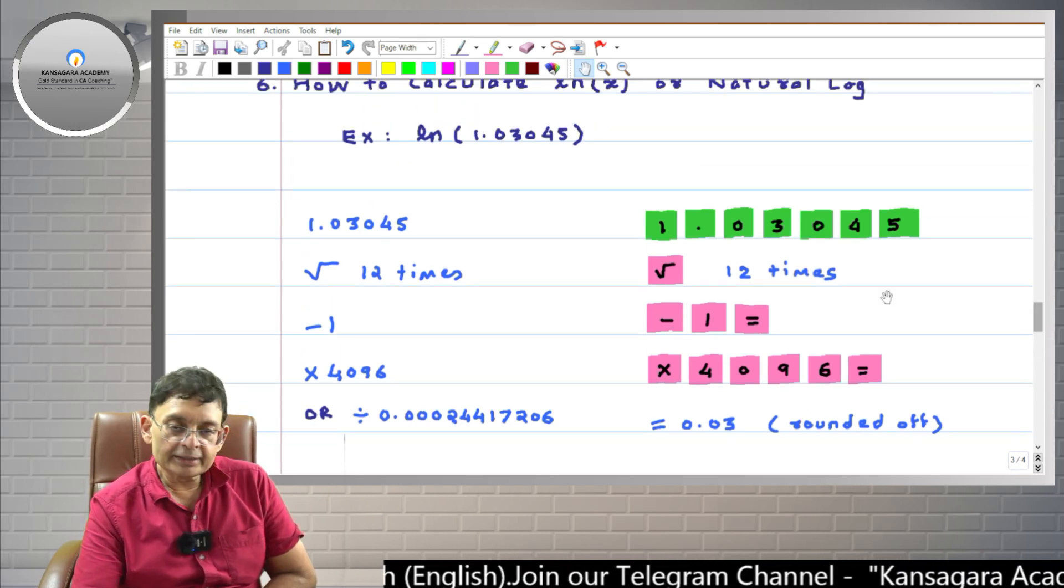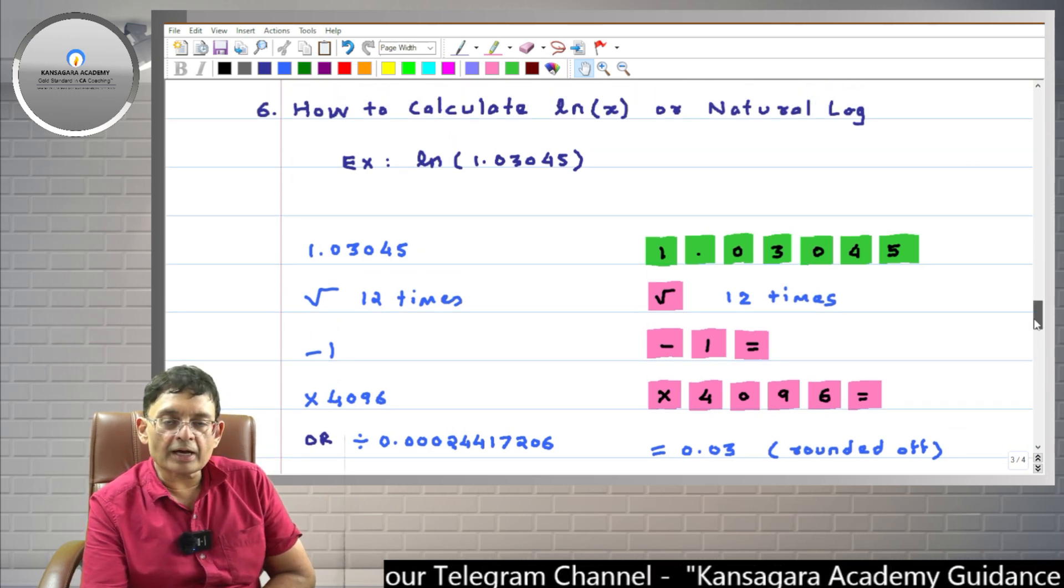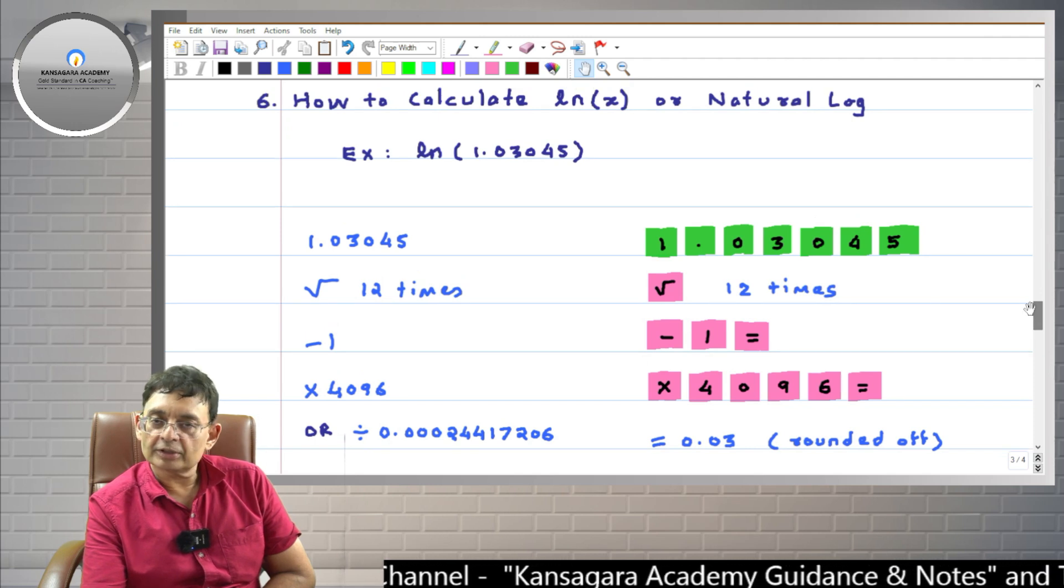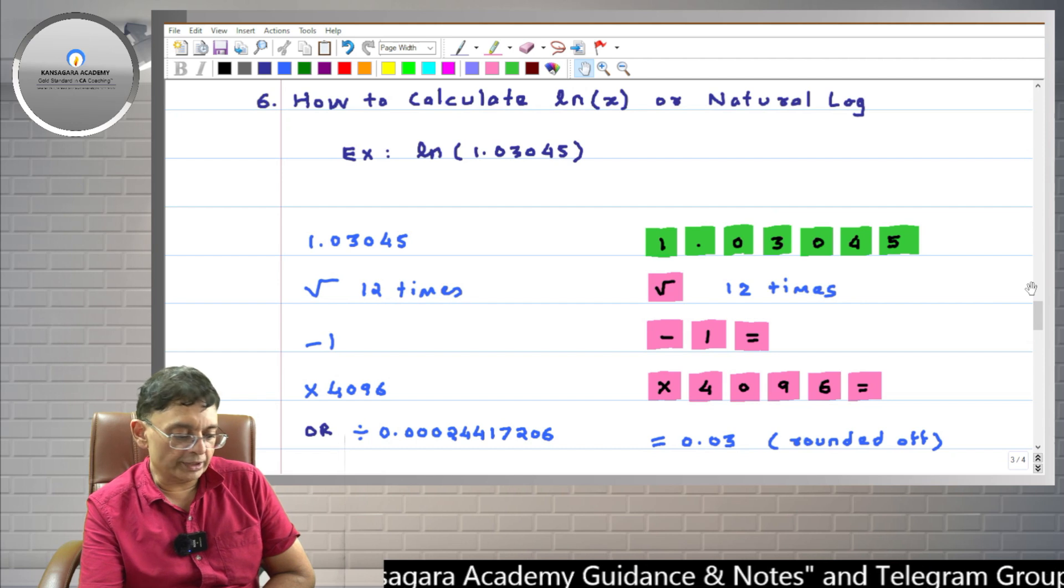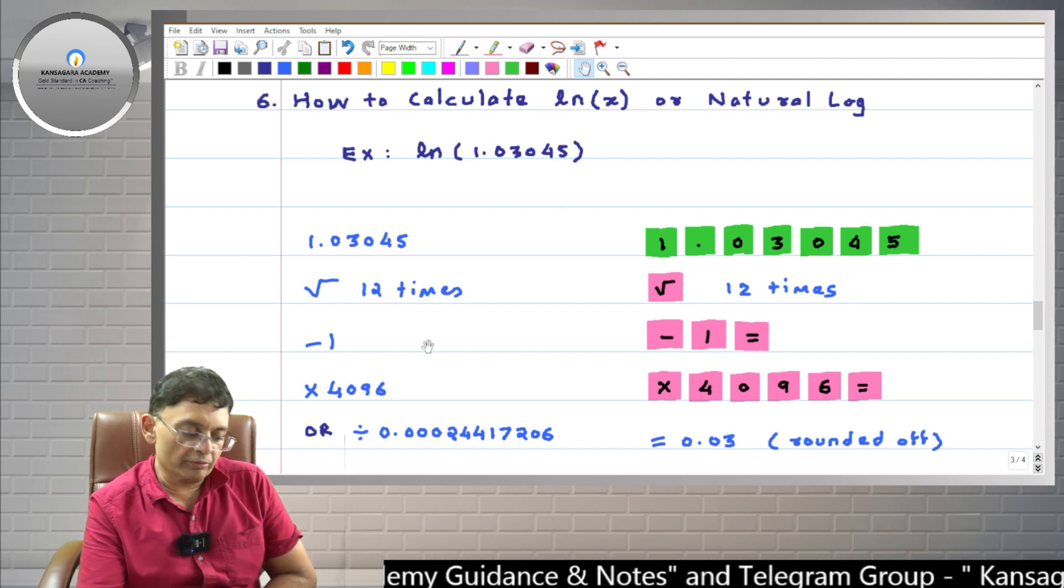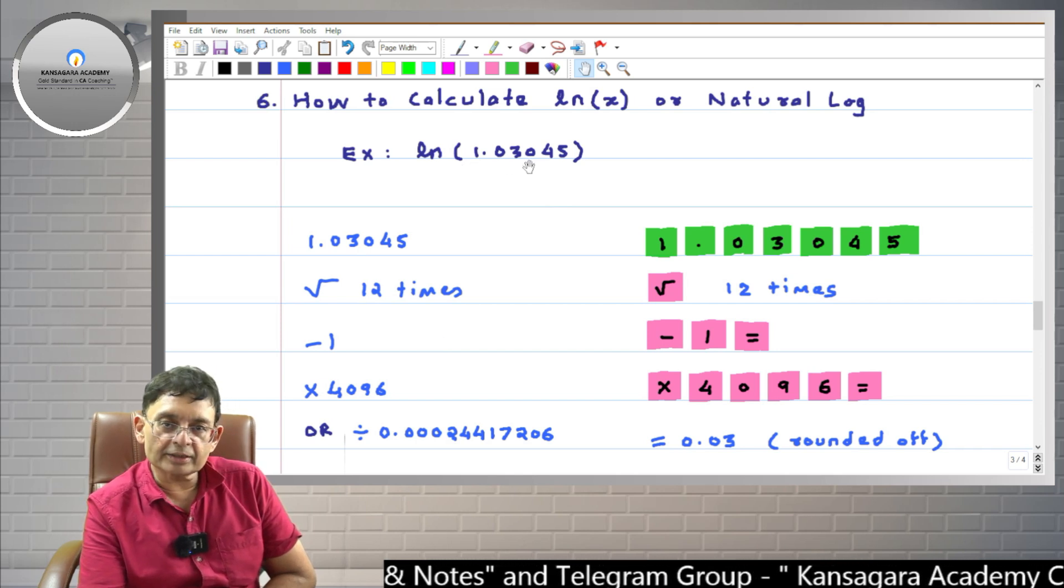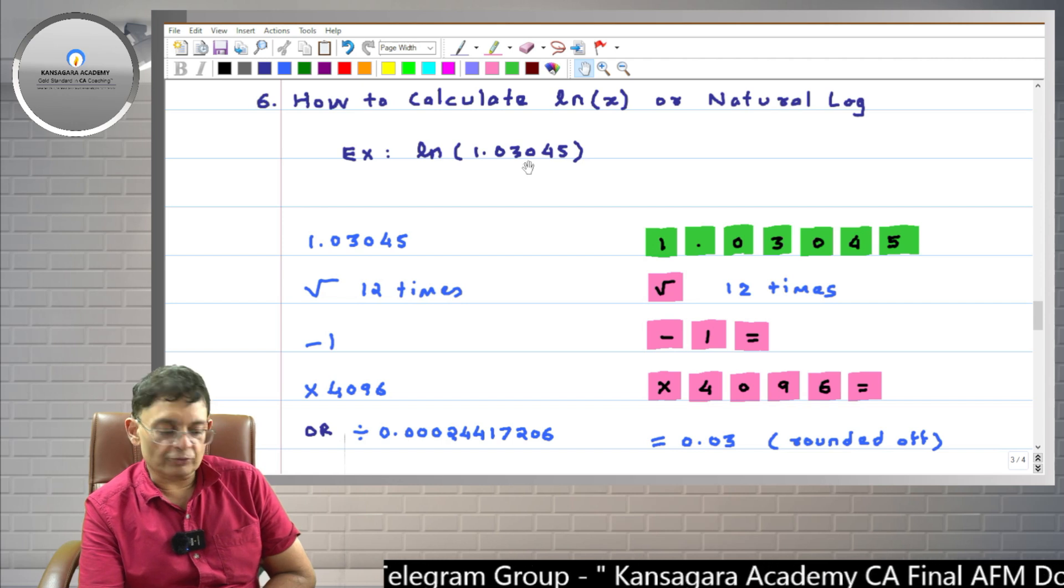Now friends, briefly, let's see the logic of this process. Friends, do you remember the how to calculate the dirty power of E with simple calculator? Separate video is available on YouTube on this, published by us only. So there, whatever process we had performed, this is just the reverse of this. Because ln is just nothing but the inverse function of power of E.